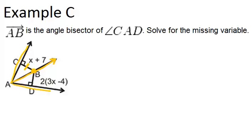So that means that these two line segments have to be the same length. So x plus 7 has to equal 2 times 3x minus 4.